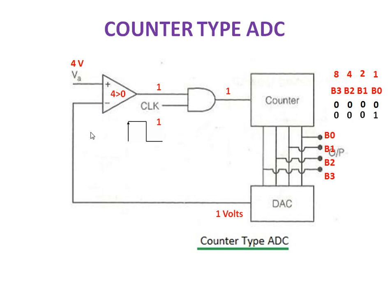This 1 volt is given to the inverting terminal of the comparator. Now the comparator compares 4 volt and 1 volt. Since 4 is greater than 1, the comparator output will again be logic 1.